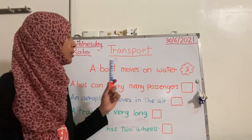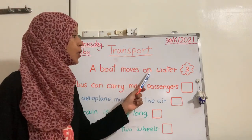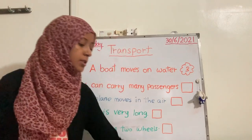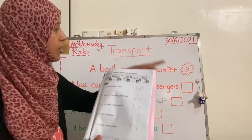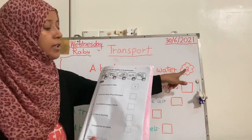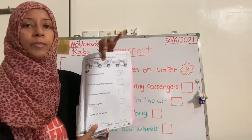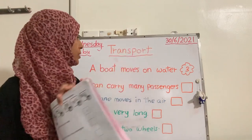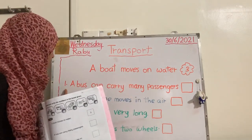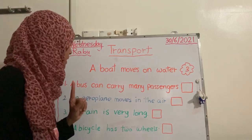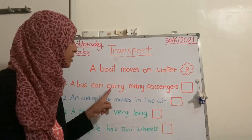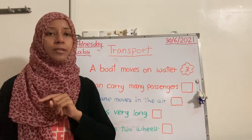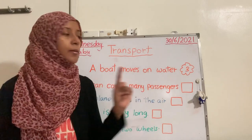A boat moves on water — which one is the boat picture? It's already given: number three. Look at number three — it's a boat moving on water. Number one: a bus can carry many passengers.